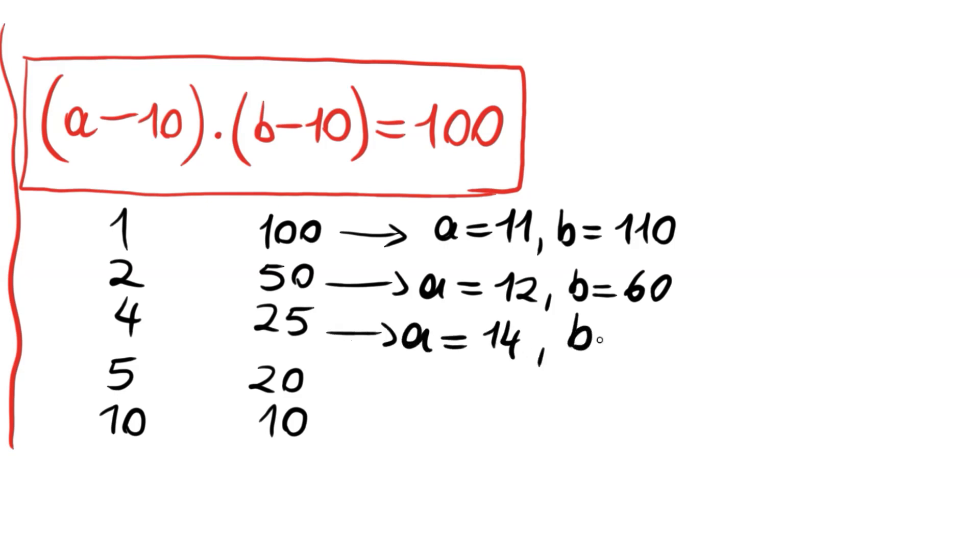A becomes 15, b becomes 30, and a becomes 20, b becomes 20. These are the solutions, positive solutions we reached.